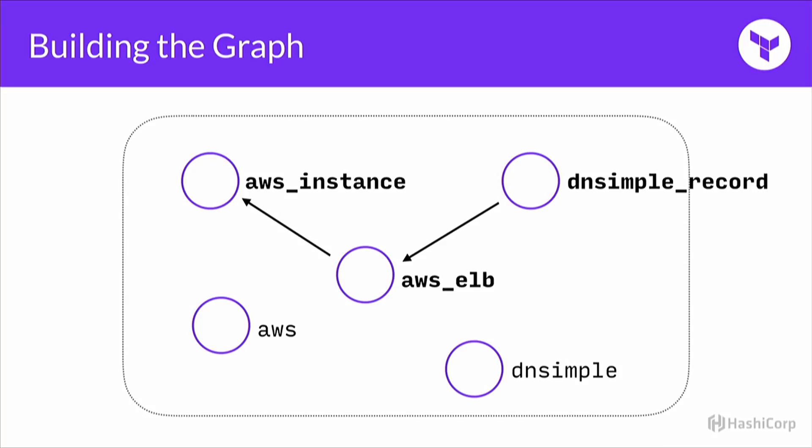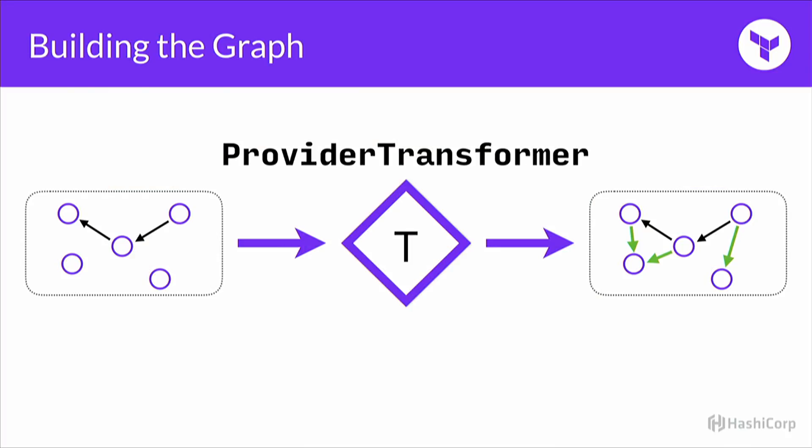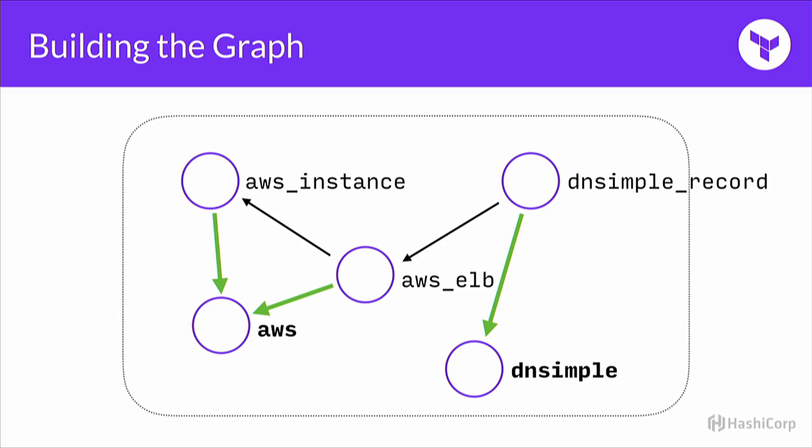Here's a simple example: an AWS instance behind a load balancer, and a DNSimple record to point to that. This is a nice visualization of the fact that from Terraform's perspective, it does not care that we're talking to two different providers — that's all outside of core. From core's perspective, these are just the names of the nodes. Based on what resources it finds in the graph, it also drops some provider nodes. The provider nodes are essentially responsible for setting up the SDK and doing any authentication step. The very next transform is responsible for connecting them up — it goes over the resources and makes them depend on the provider nodes, allowing SDKs to be set up before any talking to the resources.